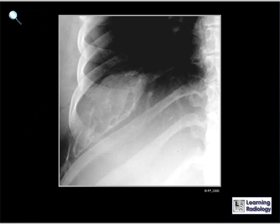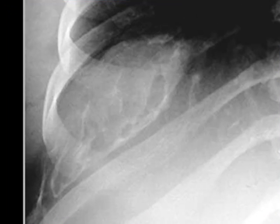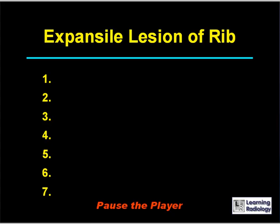Here's the next differential diagnosis. The differential diagnosis is for an expansile lesion of the ribs. There are seven major causes.